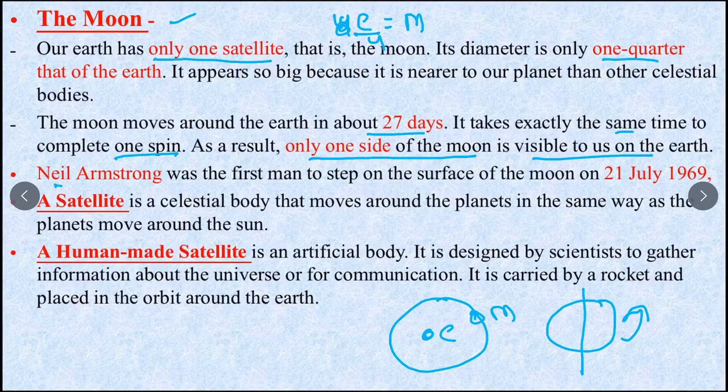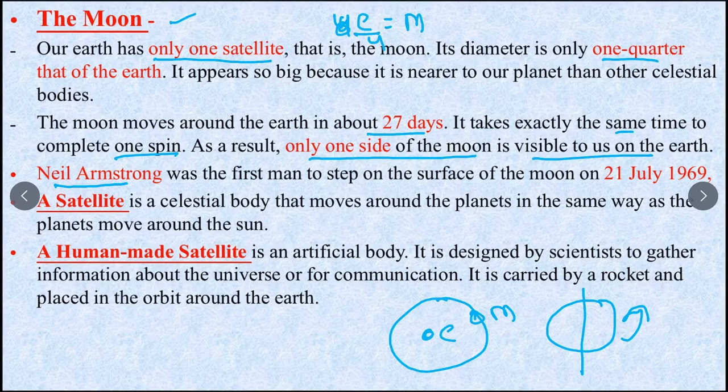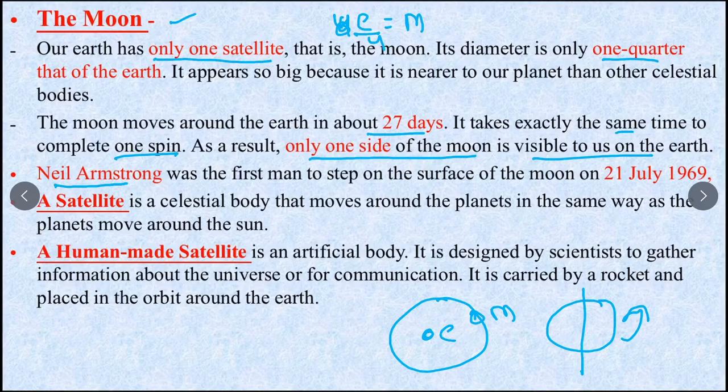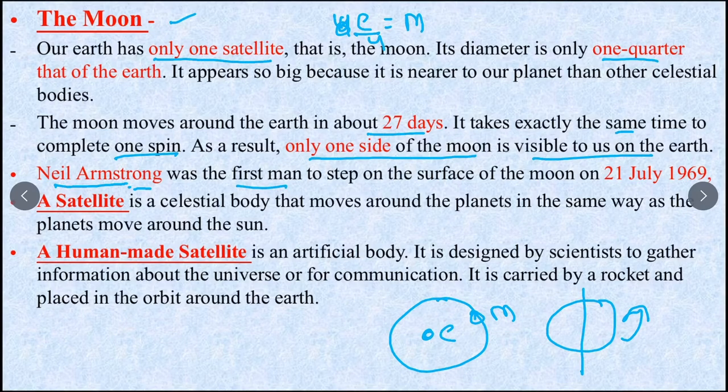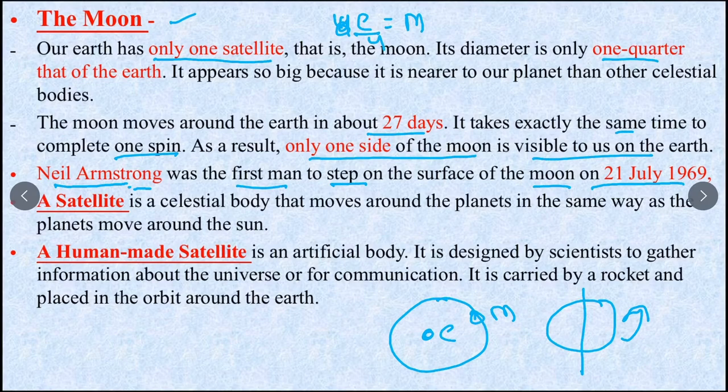Now this is an important thing given in NCERT. In the bright side of the box, there is different information. We need to focus on this. Neil Armstrong - we all studied this. He was the first person who stepped on the moon. When did it happen? 21st July 1969. This is asked in exams so you have to remember.